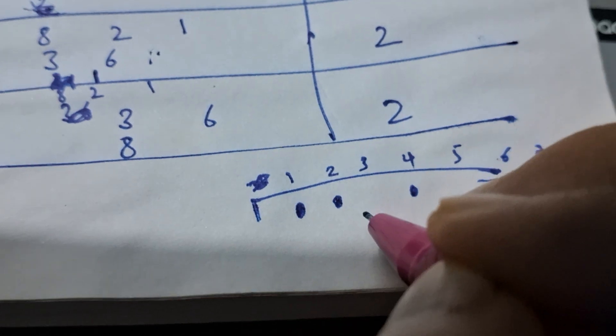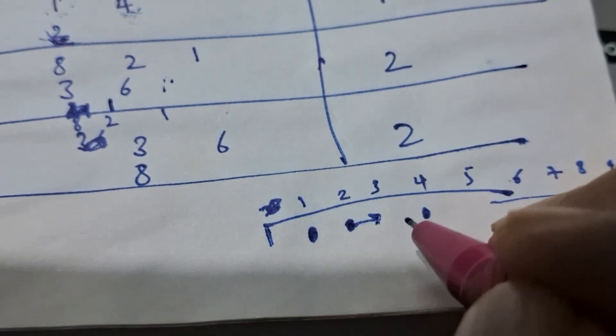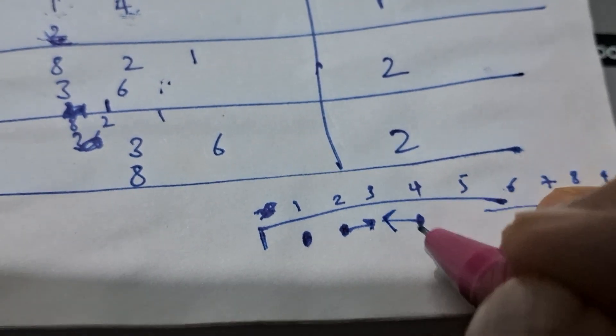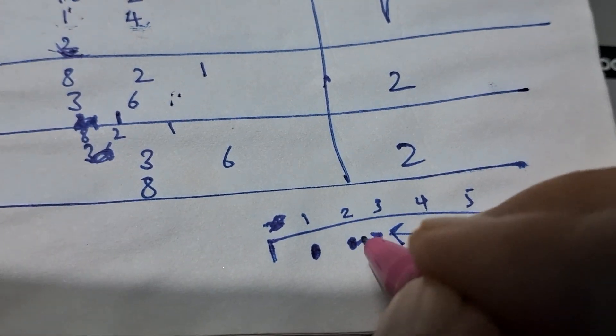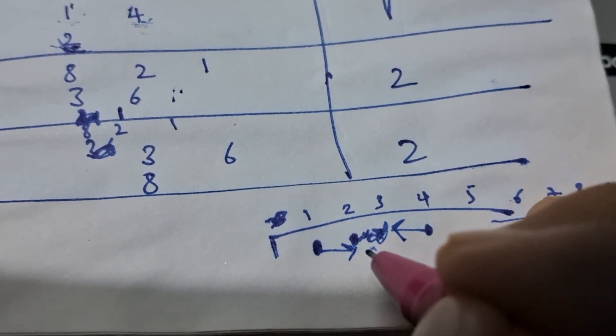So what this person will do is he will try moving over here. Now if he tries moving over here, this person will come over here and catch him in the first move only. And if he stays over here then this person will come over here and catch him in the first move only.